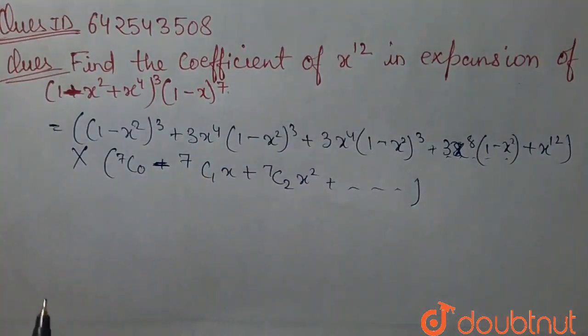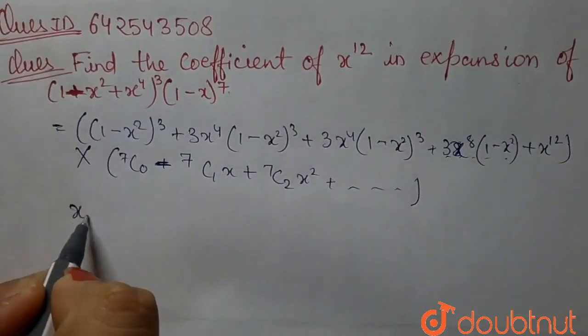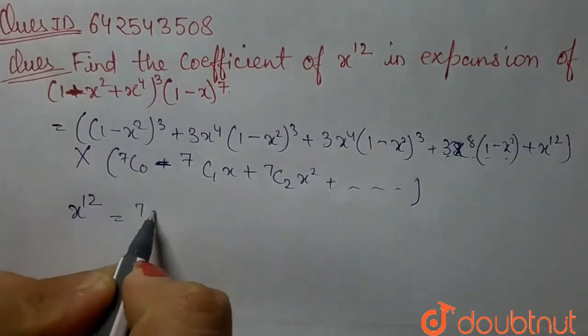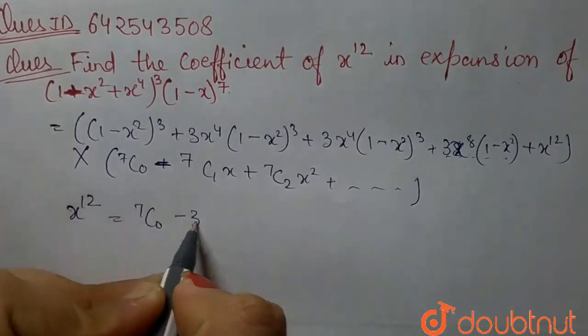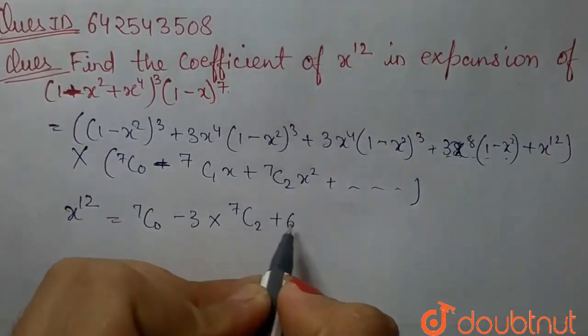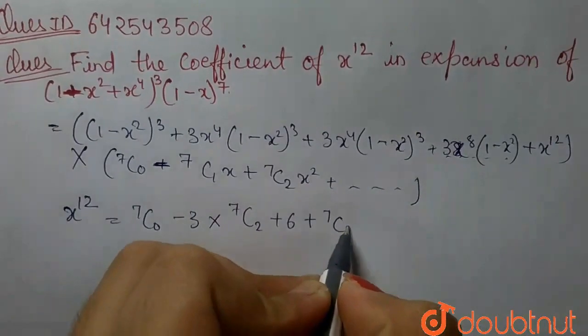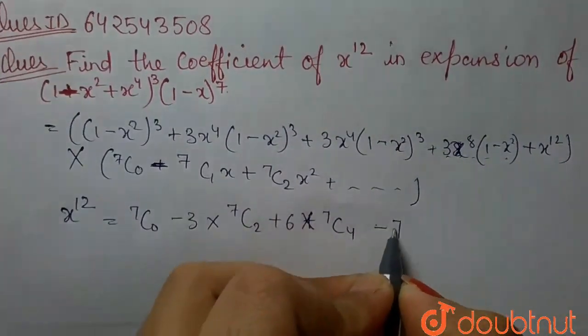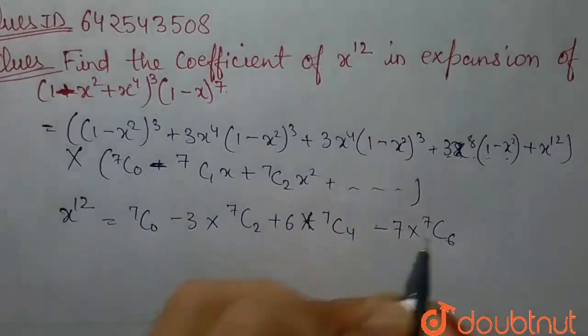So, the coefficient of x to the power 12 is equal to 7 c 0 minus 3 into 7 c 2 plus 6 times 7 c 4 minus 7 into 7 c 6.